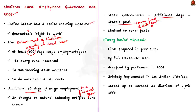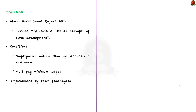The act was first proposed in 1991 by then Prime Minister PV Narasimha Rao, and was finally accepted in parliament in 2006, commencing implementation in 625 districts of India. Based on that pilot experience, NREGA was expanded to cover all districts of India from April 1, 2008. The statute is hailed by the government as the largest and most ambitious social security and public works program in the world. The World Bank also appreciated it in its World Development Report 2014, terming it a stellar example of rural development.